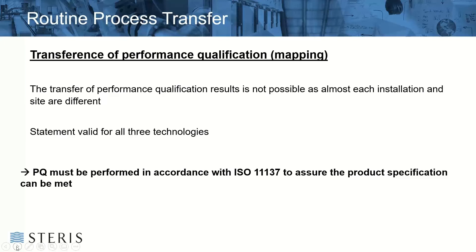For PQ — performance qualification or dose mapping — no matter what change you make in the irradiator, if you change the irradiator you're processing in, whether or not you're changing technologies, you have to do a map of that system. Maps don't transfer between irradiators. That's clearly stated in ISO 11137. You need to do this to assure that the distribution of dose across your product is being achieved within the dose range you need.